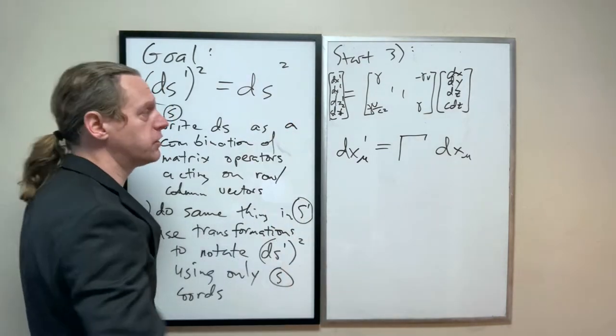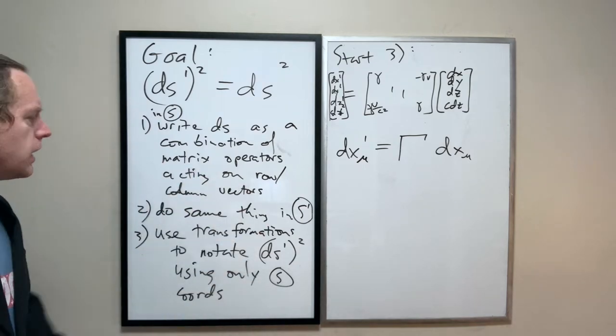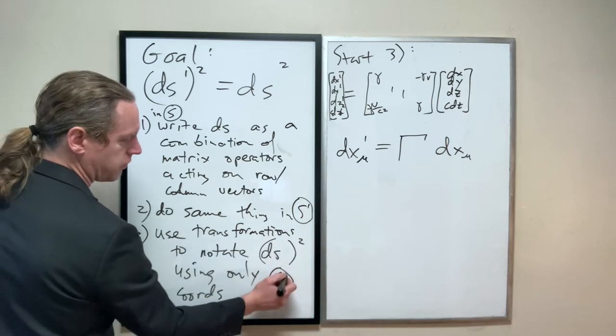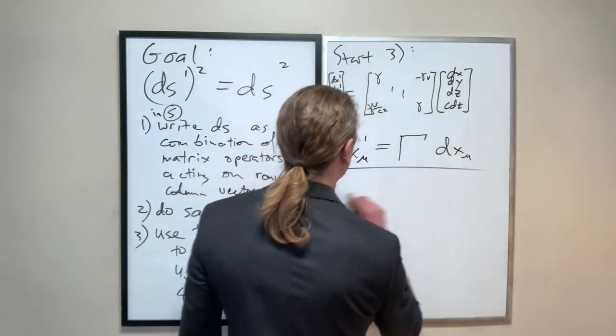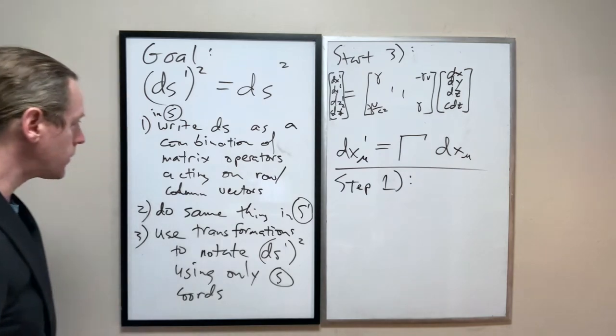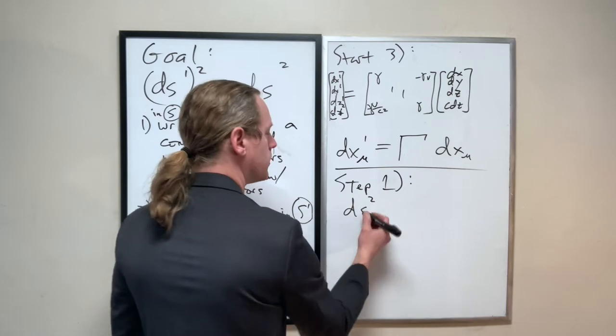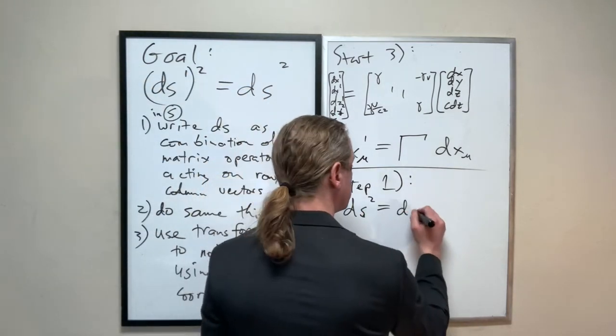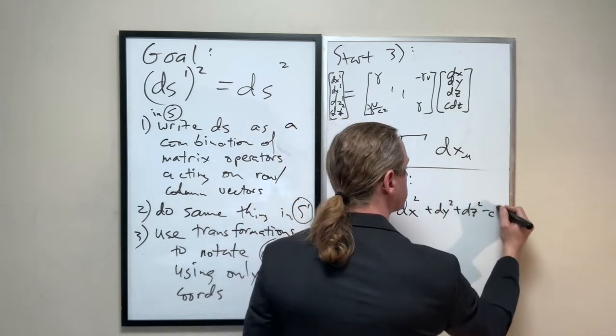So we know that's true. And that's really all that we need to do for step three. Great, and I think, yeah, I think maybe we're going to do this the other way. We're going to write ds squared using only variables from s prime, in fact. Anyway, okay, so we have step one.